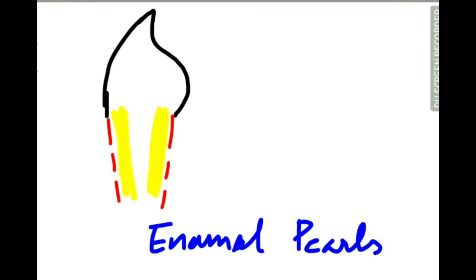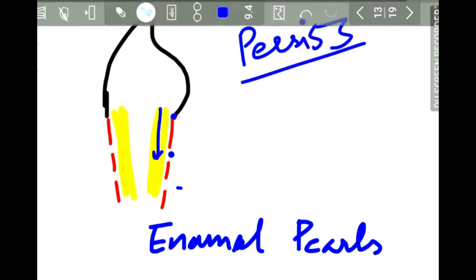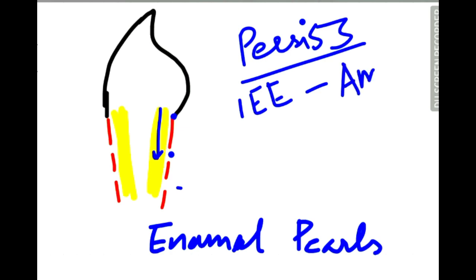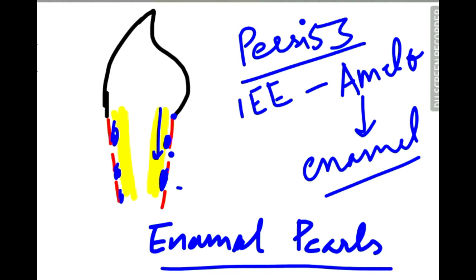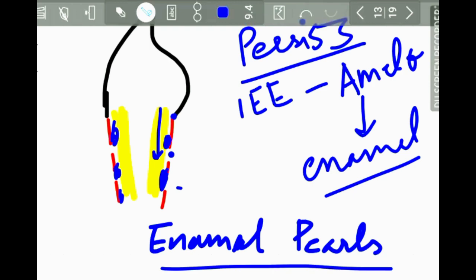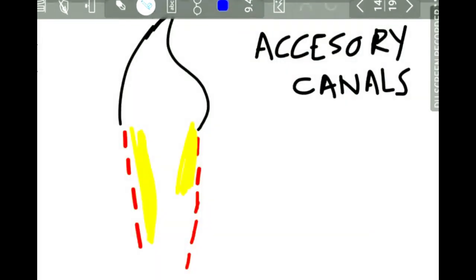As dentine formation continues, Hertwig's epithelial root sheath breaks down and moves away from the dentine. However, in some cases, the root sheath persists on the dentine surface for a longer time. The inner enamel epithelial cells then differentiate into ameloblasts, and these ameloblasts lay down enamel on the root surface. These enamel deposits are called enamel pearls, and they are mostly found in the furcation area of multi-rooted teeth.